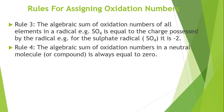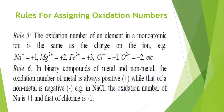Rule four: the algebraic sum of the oxidation numbers in a neutral molecule or compound is always equal to zero. Rule five: the oxidation number of an element in a monatomic ion is the same as the charge on the ion. For example, sodium ion is plus one, magnesium ion is plus two, iron(III) is plus three, chloride ion is minus one, and oxygen ion is minus two.